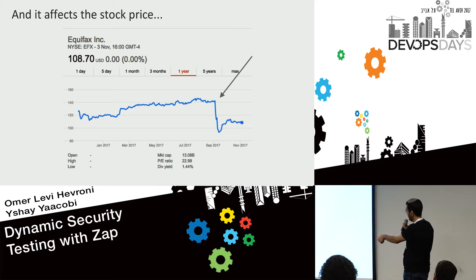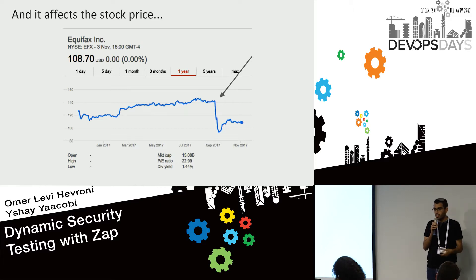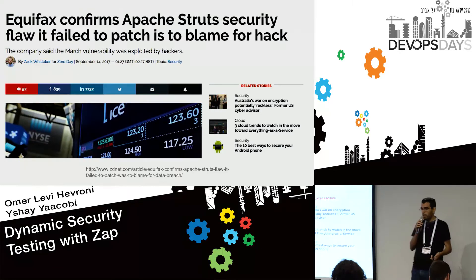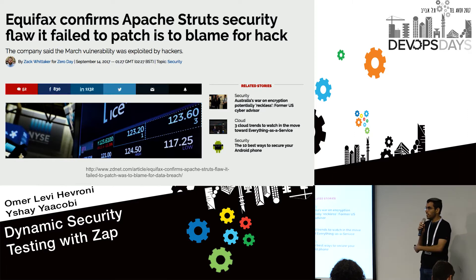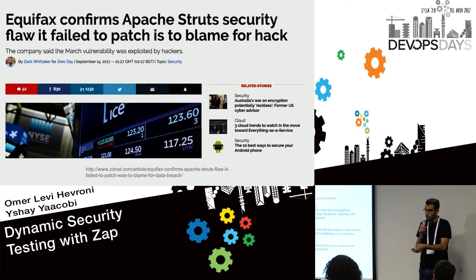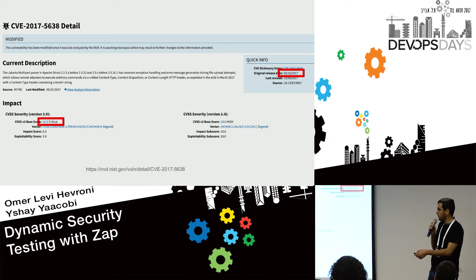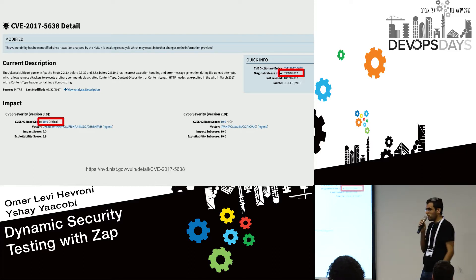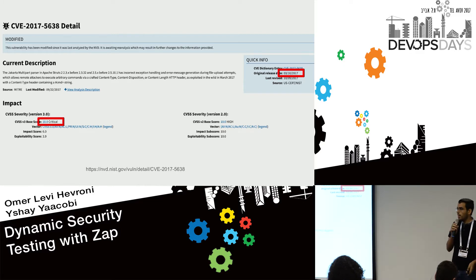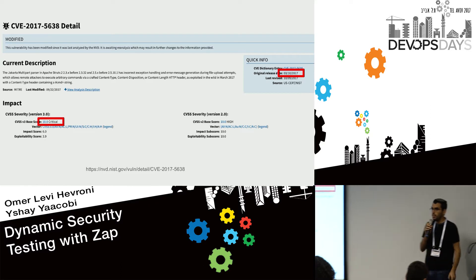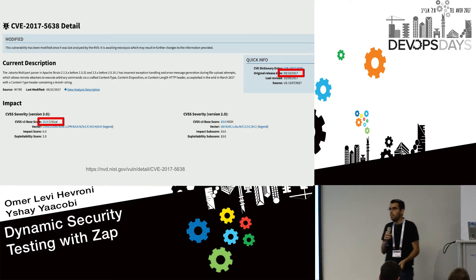The breach happened in July and was only disclosed in September. You might be thinking this happened because of some sophisticated zero-day, but actually no. It happened because Equifax used a library called Struts, this library had a known vulnerability, and they didn't patch it. The severity was 10 out of 10, and the vulnerability was disclosed in March — they had four full months to patch it and didn't.